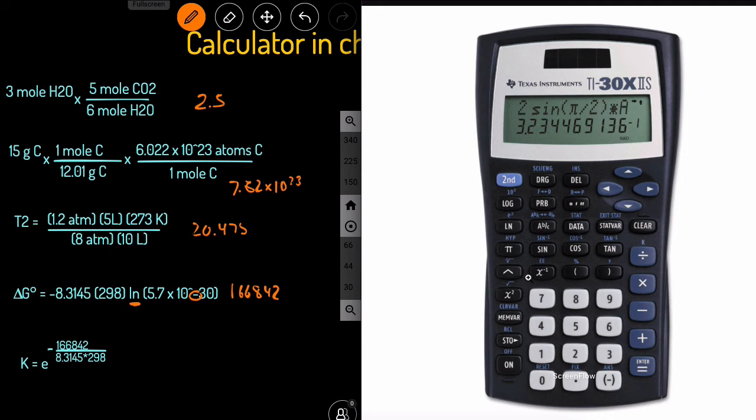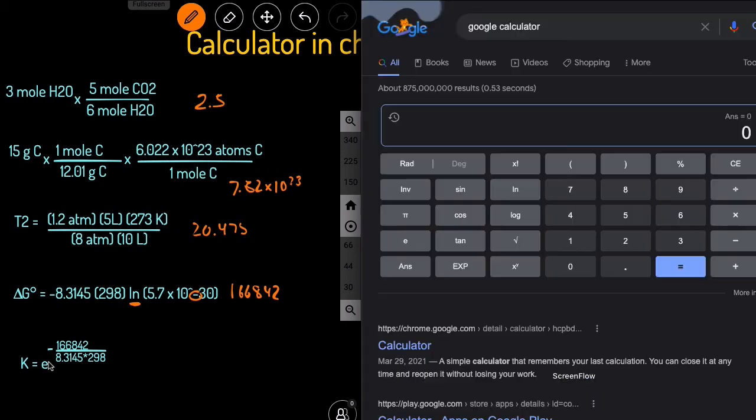Now on the other calculator, to enter the ln, you click this button here. And then to get the negative, you would click this button down here.